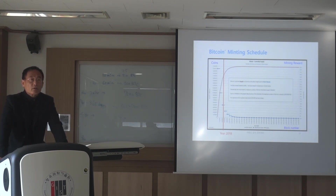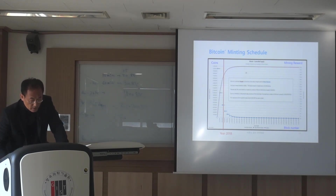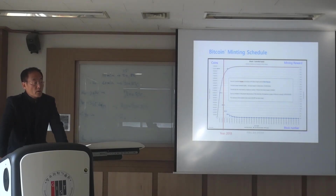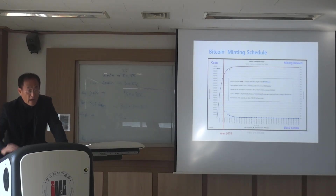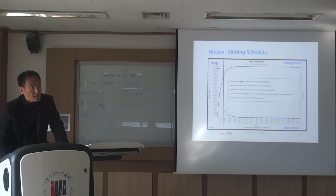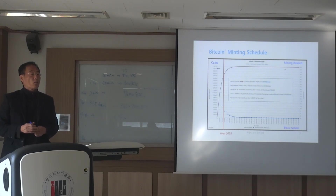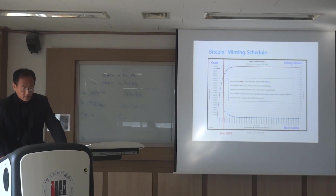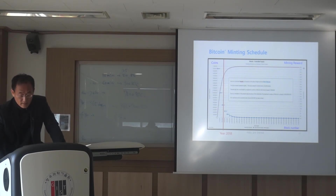When will be the next halving period? Year 2024 will be the next halving period. As you can see, more than 90% of Bitcoin has been created so far. If we keep halving it, it will converge to a number which is 21 million. So that's the only Bitcoin that are ever going to be created. And there will be no more Bitcoin created after this.